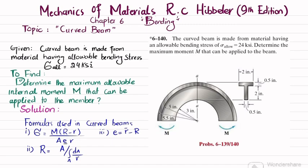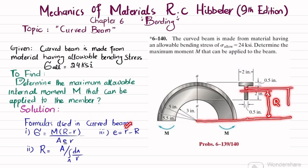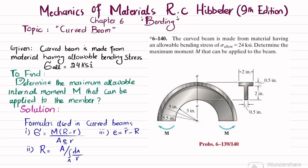Let's start with the solution. The formula used for curved beams involves eccentricity e, which equals R̄ minus R. Capital R equals A over the integral of dA over r for the entire area A. Here M is the moment, sigma is bending stress, capital R is the distance from the center of curvature to the neutral axis, and R̄ is the distance from the center of curvature to the centroid of the section. In curved beams, R̄ is always greater than R. We will find R̄ and R first.